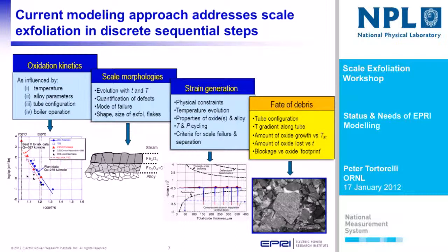Then we move on to strain generation. We have to know the physical constraints — the geometry comes into play here and is taken into account in the model. The temperature evolution, the properties of the oxides and alloys, the temperature and pressure cycling, and then the criteria for scale failure and separation, which allows us to map a trajectory and see where it passes the critical thickness of failure. Finally, and the most difficult part because it's based on the greatest number of assumptions, is the fate of the debris, which gets us to the blockage model.